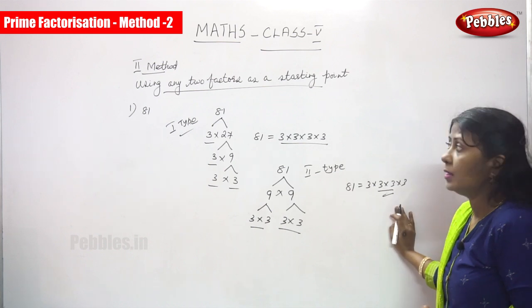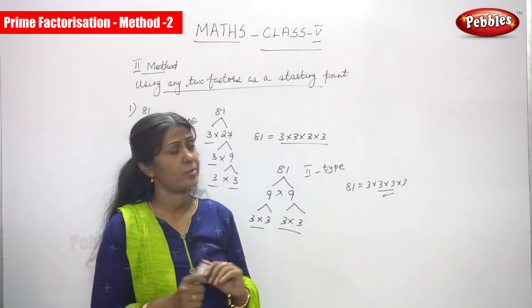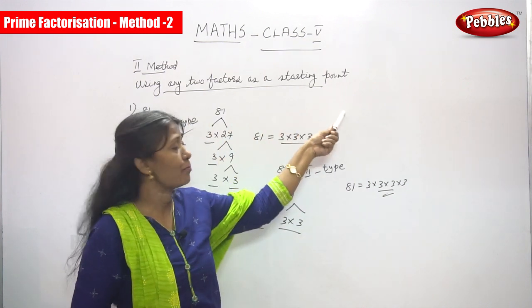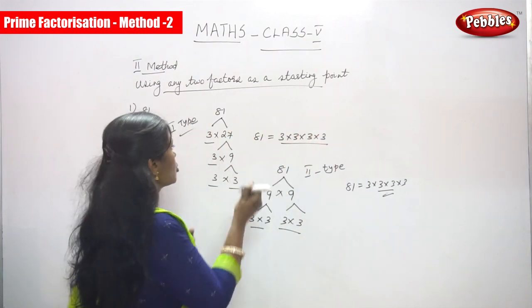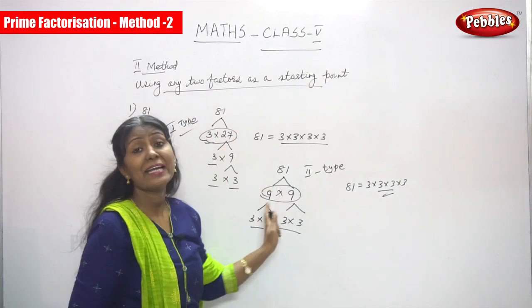This is the second method in prime factorization, using any two factors as a starting point. So these two are the starting point and these two are the starting point, any two factors.